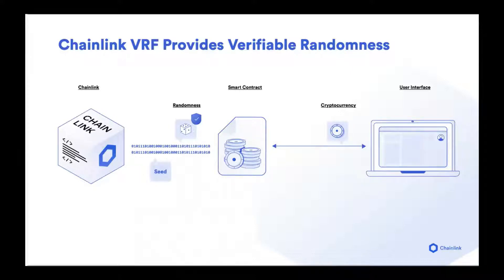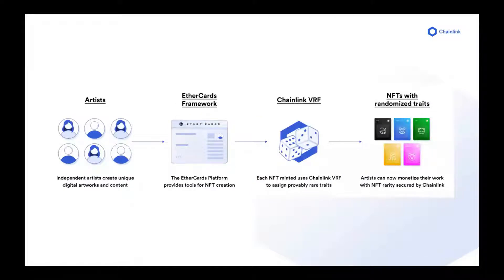I also want to talk about the Chainlink VRF — Verifiable Randomness Function. The Chainlink VRF brings a method to generate provably random numbers on-chain. You may be asking yourself: why can't I just generate that on-chain? Can I use the block hash from a previous block, or connect to a random API? But all of these create security issues on-chain and can be gamed by actors such as miners, or if you're using an API, a single API can be gamed. The Chainlink VRF allows a way to access secure and provably secure randomness on-chain using some really advanced cryptography.